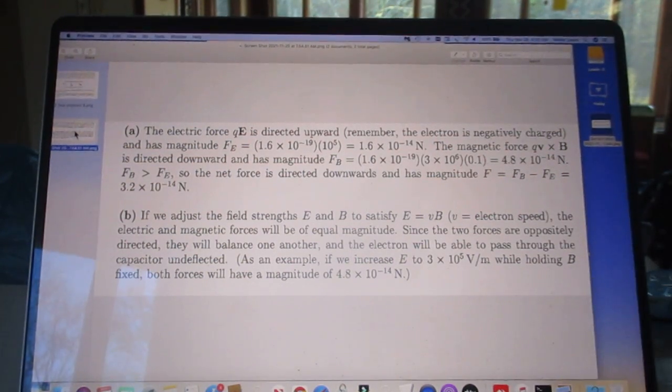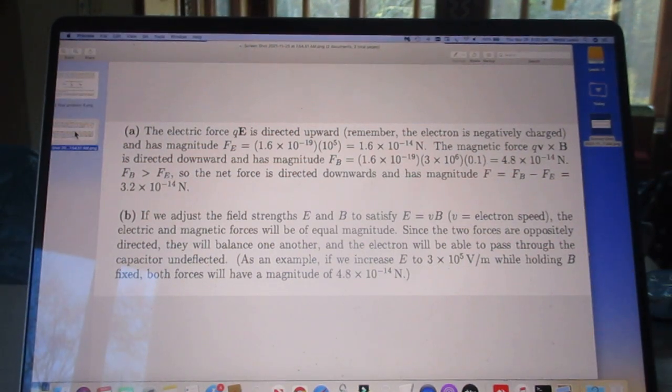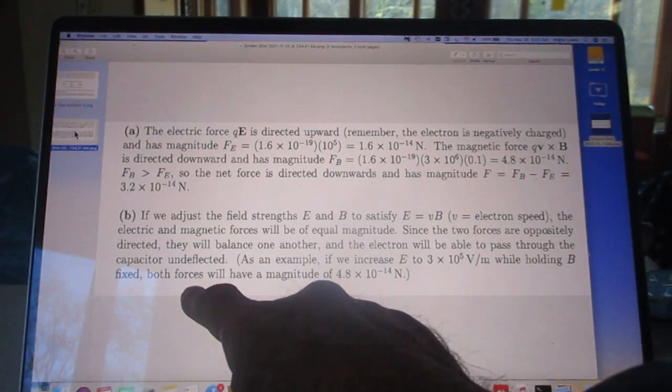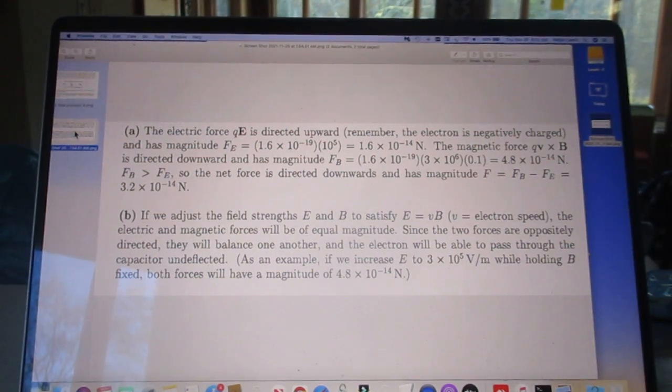If E is 3 times 10 to the fifth, and we're holding B fixed, then both forces have a magnitude 4.8 times 10 to the minus 14. So we increase E to 3 times 10 to the fifth volts per meter, and we keep B as it is.